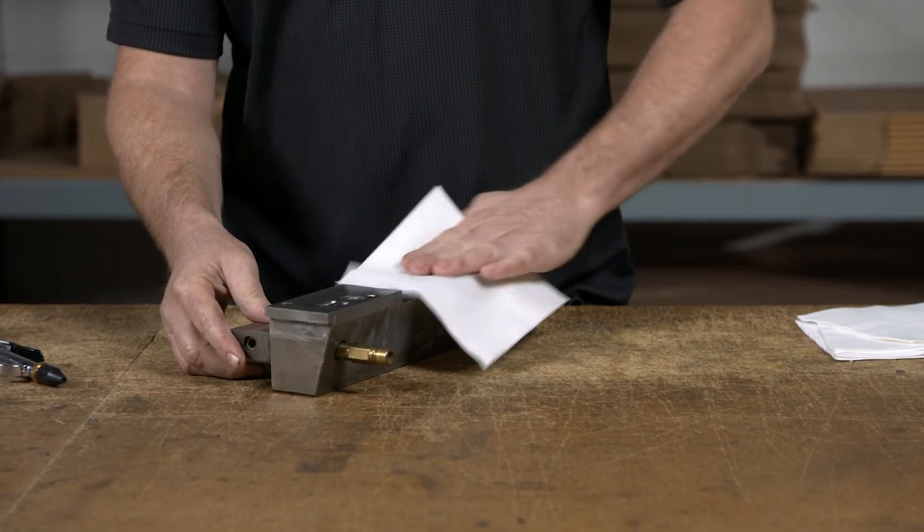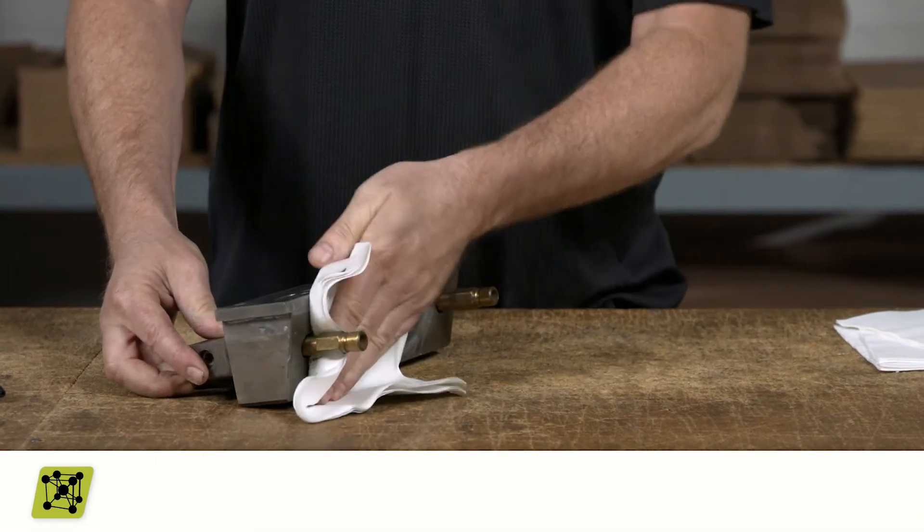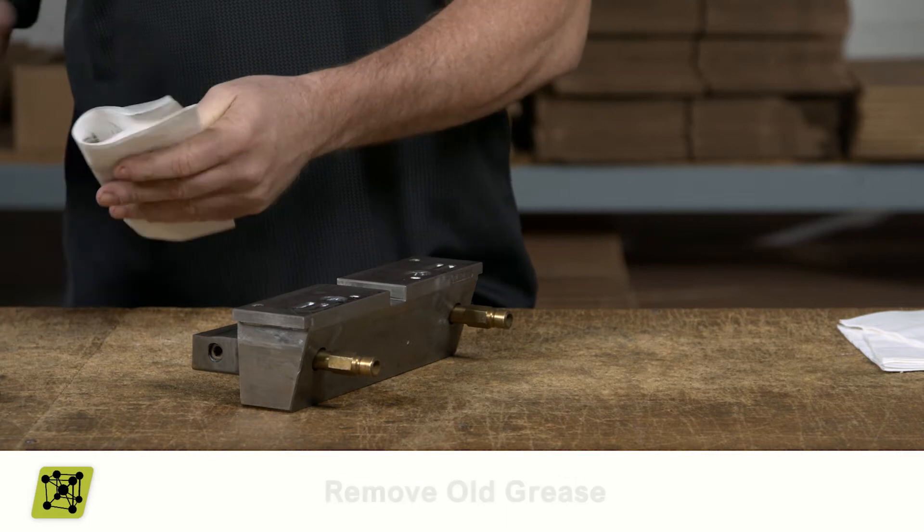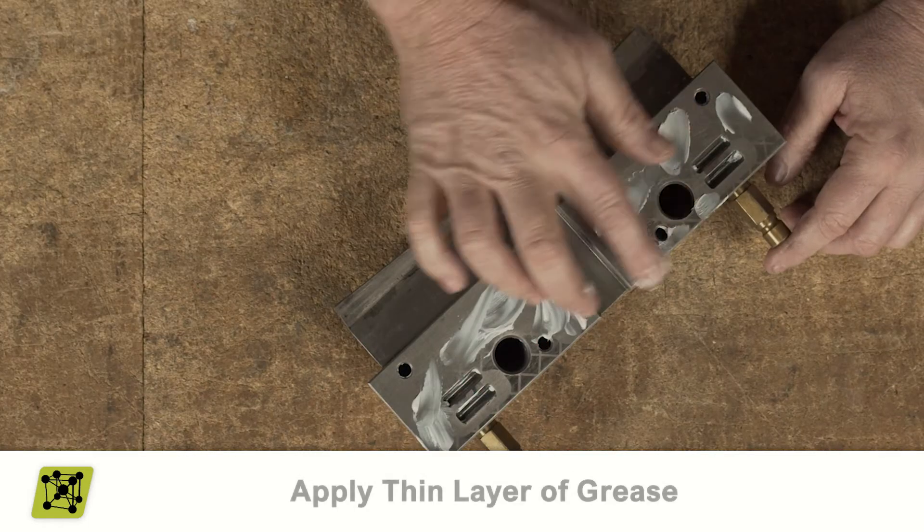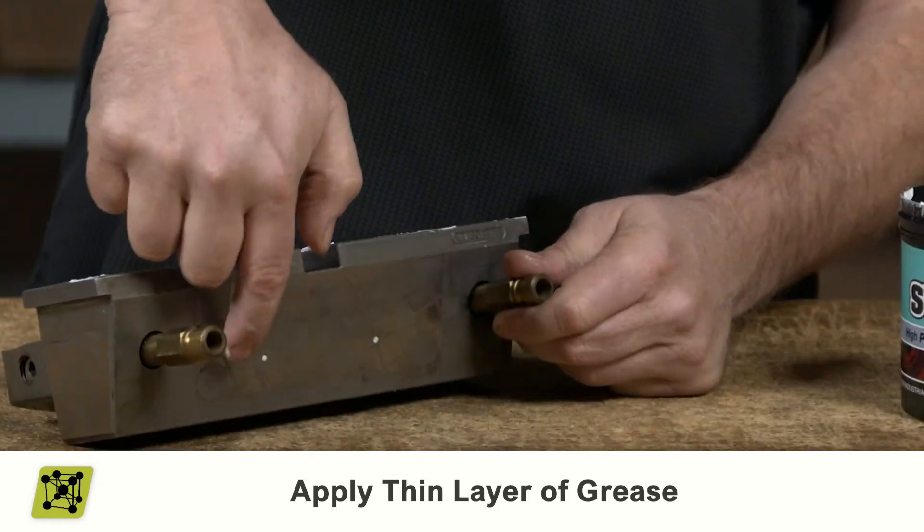Here we're going to be applying grease to a slide bearing surface. As always, be sure to remove any old grease prior to adding the new grease. First, using your fingers, apply a thin layer of grease on the slide, top of the foot, and the bottom.